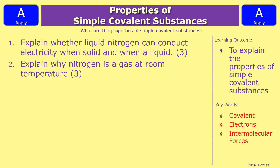Question two: explain why nitrogen is a gas at room temperature. This is a bit of application, so you need to think: nitrogen is a gas, so it's got to be simple covalent. And if it's simple covalent, why is it a gas? Why does it have a low melting point? And so on.